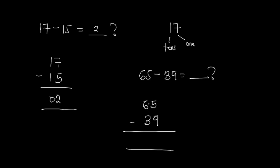Note that we are borrowing from 6, which in terms of the tens column represents 10. So if we borrow one from here, the 6 becomes 5, and that one we borrowed we bring to the 5 over here — it becomes 10, so 10 plus 5 becomes 15. Now we have 15 minus 9, which gives us 6. We write down our 6. We have 5 left in the tens column, and 5 minus 3 gives us 2. So our answer is 26.